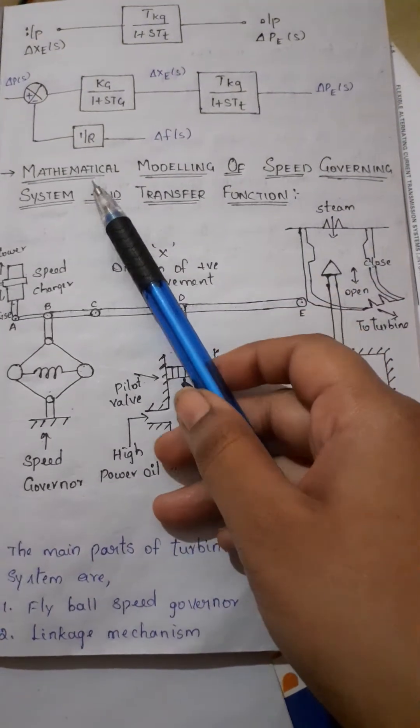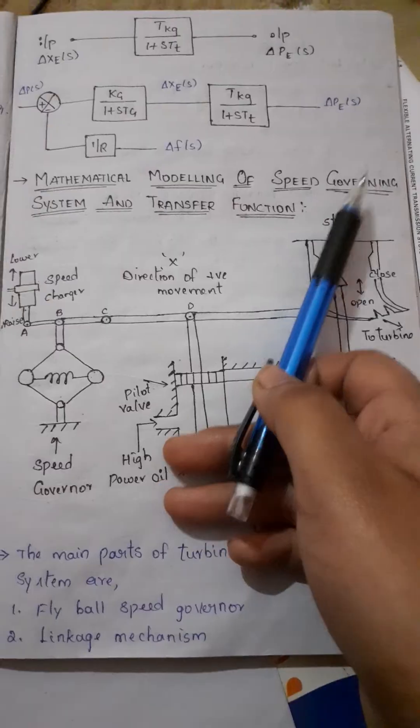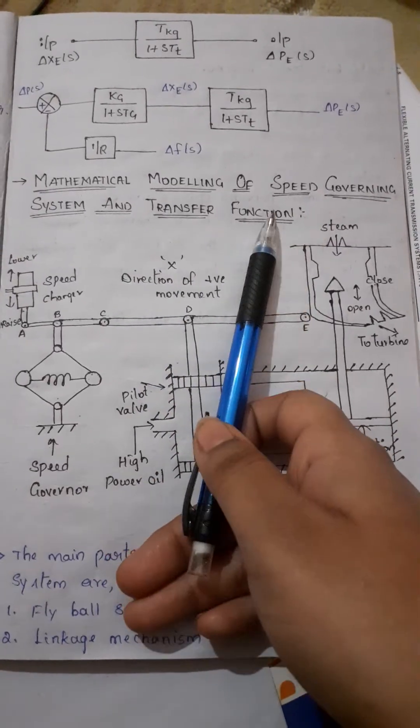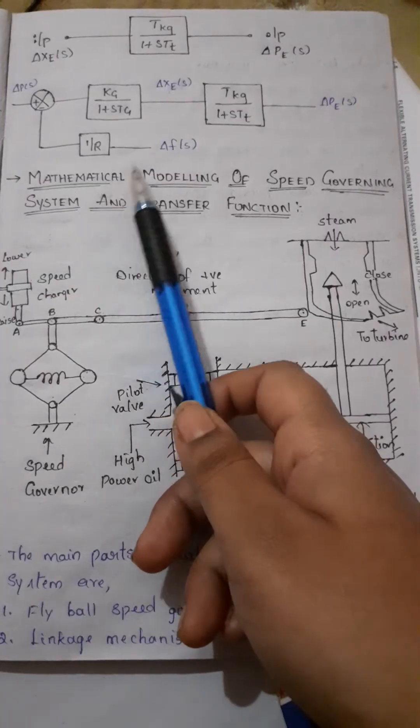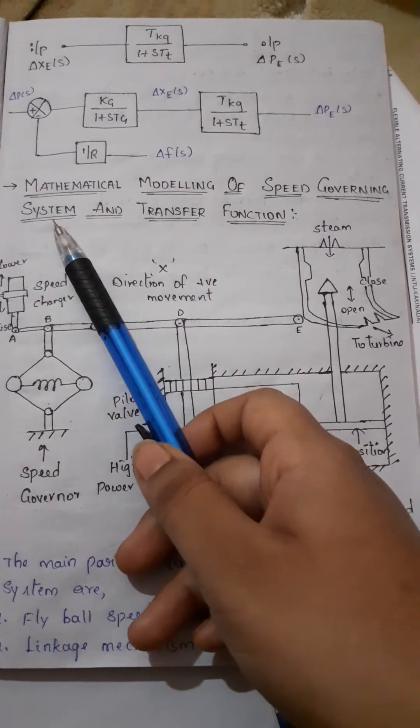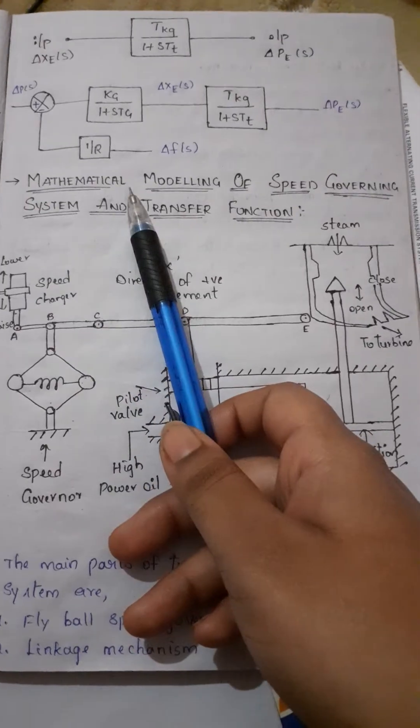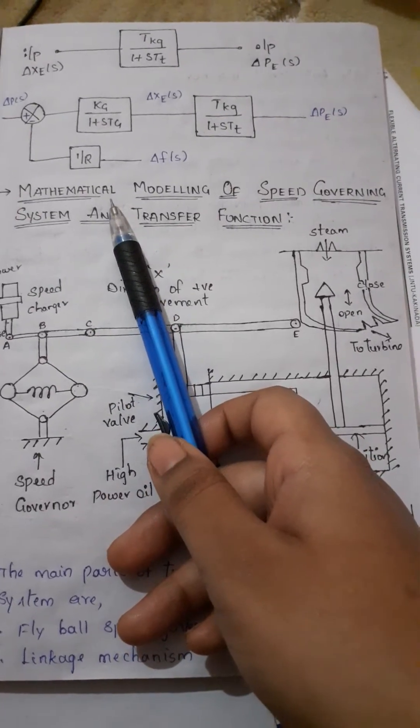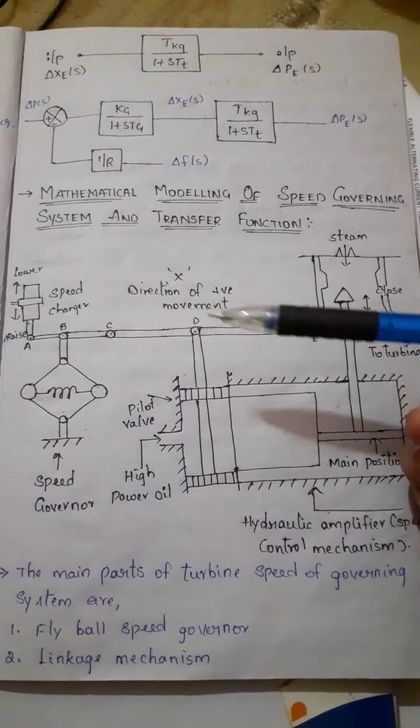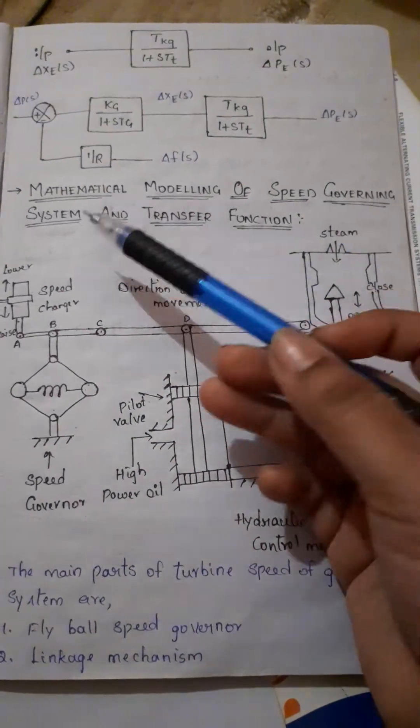The concept is mathematical modeling of speed governing system and transfer function. In this video I am going to explain about mathematical modeling of speed governing system related to the power system operation and control subject.